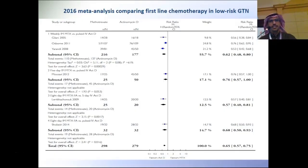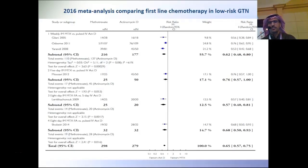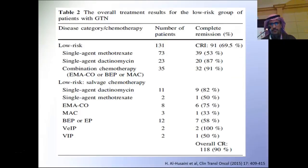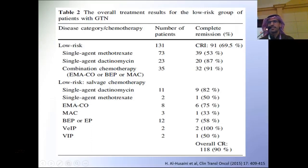A 2016 meta-analysis of patients with low-risk GTN treated with single-agent chemotherapy, comparing dactinomycin versus methotrexate across seven randomized trials, showed a higher cure rate with dactinomycin compared to methotrexate, with a relative risk ratio of 0.65, which is significant. From our experience at KFSH, 131 patients with low-risk GTN: complete remission to initial chemotherapy was around 70%. Single-agent methotrexate achieved 53%, single-agent dactinomycin 87%. Around 25% required salvage therapy, and overall complete remission was around 90%.